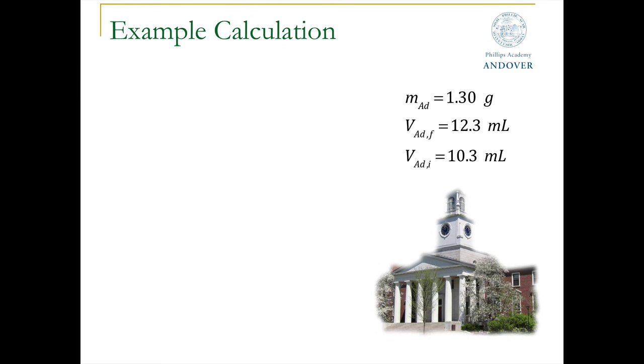Thanks, Carter. Let's suppose we discover a new element, let's call it AD after our dear academy, and we want to determine its density using the method we just described. This is our data set that we got from the lab. The mass of AD is 1.30 grams, and the final and initial volume were 12.3 milliliters and 10.3 milliliters. Obviously, we're using a displacement method.